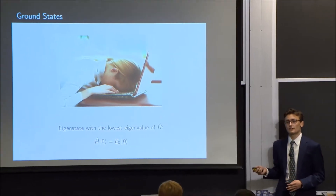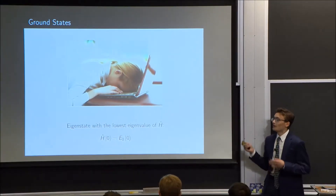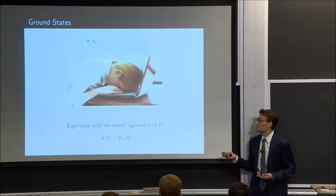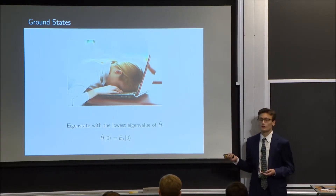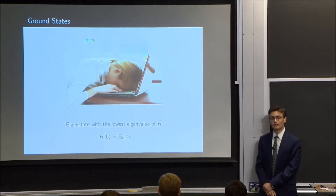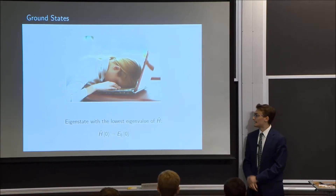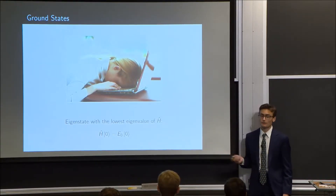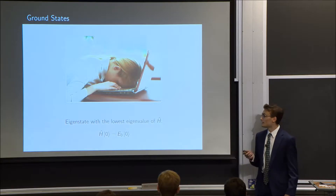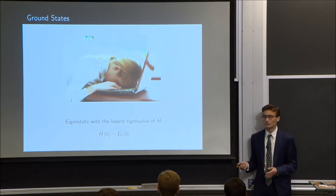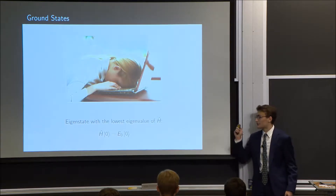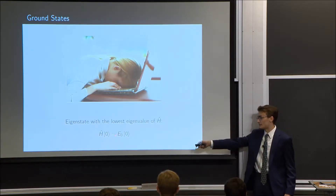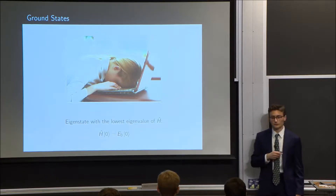Whenever we study a quantum system, one of the most important things to find is its ground state. The ground state is just the state associated with the least energy. In physics, we define it as the eigenstate with the lowest eigenvalue of the Hamiltonian matrix. What that means is that if we have a Hamiltonian, we can perform linear algebra on it and eventually arrive at a ground state and its associated energy, which is its eigenvalue.